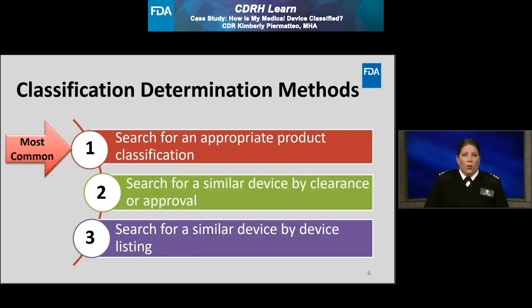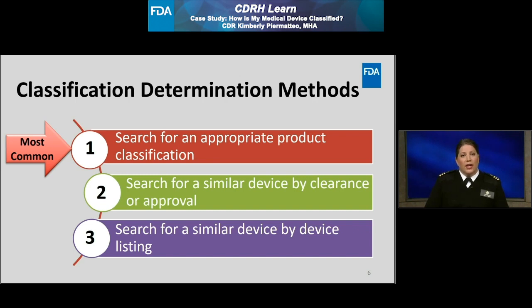When determining a device's product classification, there are three methods that I recommend. The first is to directly search for the appropriate product classification — I'll refer to this as method one, and this is the most common method used. A second method, or method two, is to search for a similar device by its clearance or approval. And lastly, method three is to search for a similar device by device listing. I'm going to walk through how to conduct each of these search methods over the next several slides.